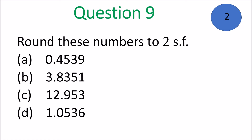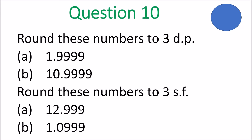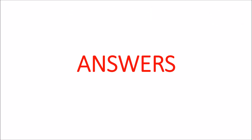For question 9. And question 10: Round these numbers to three decimal places — that's three numbers after the point. You have A and B. And then round these numbers to three significant figures, meaning you want to look at the three digits at the front. Remember, 0 in the middle is significant. Okay, answers — here we go.